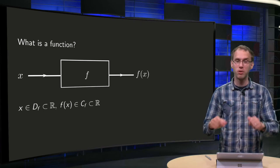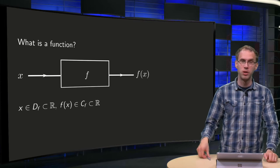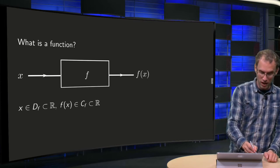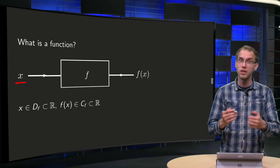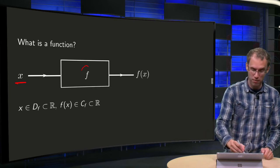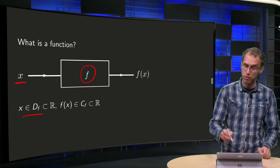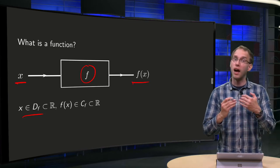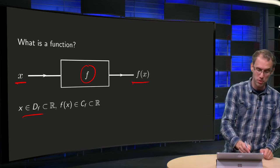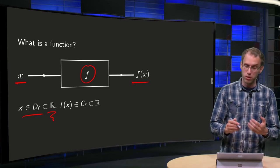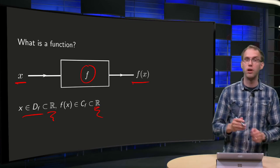Let's go back to the real case first. What was a real function? A function is a rule f which assigns to any x in the domain of the function a function value f(x). For real functions, the domain is a subset of R and the codomain is also a subset of R.